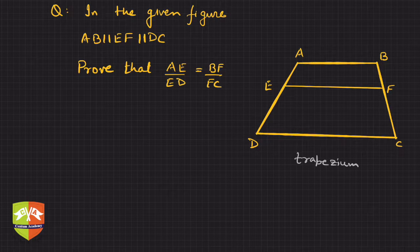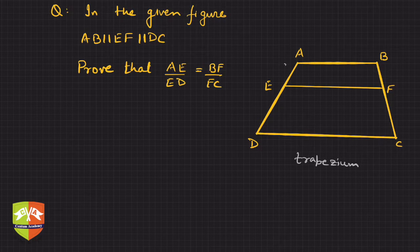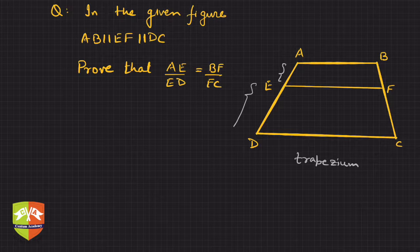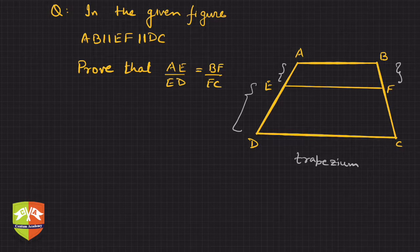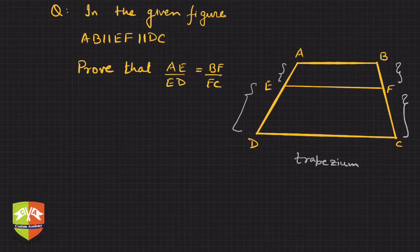Now you have to prove that AE upon ED is equal to BF upon FC.